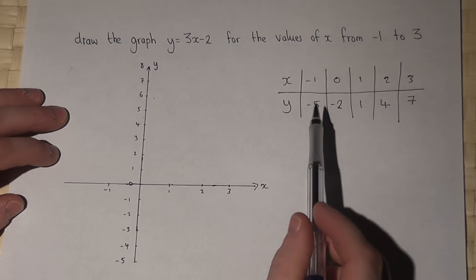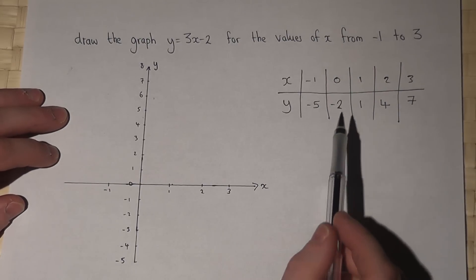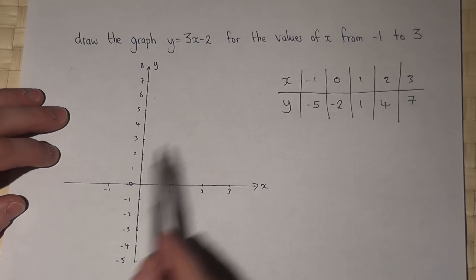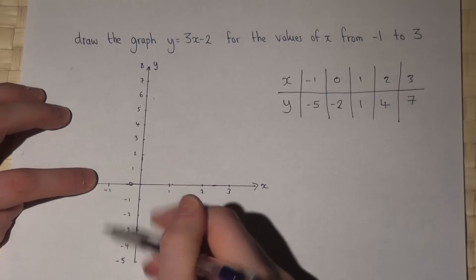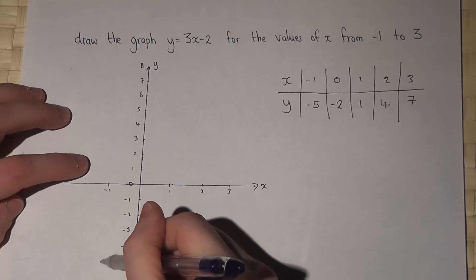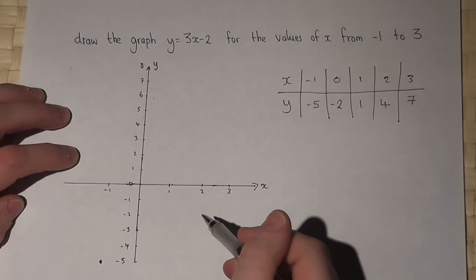So I found a table of values which gives me some coordinates to plot. So when x is minus 1, y is minus 5, so down here I put a dot. Of course in the exam we use pencil here.